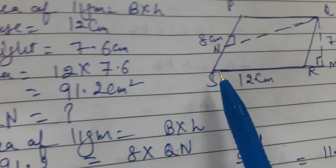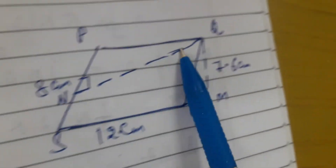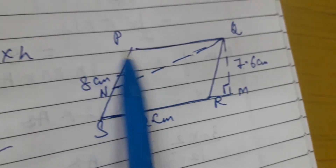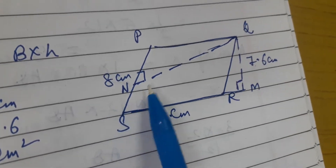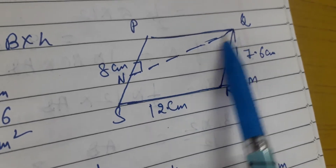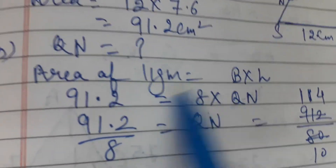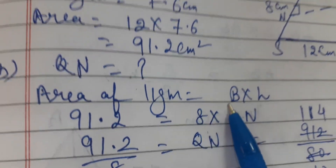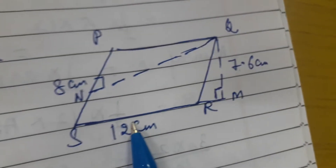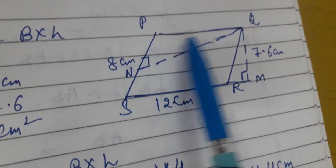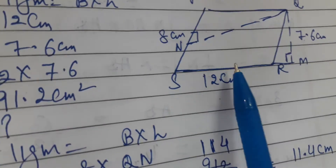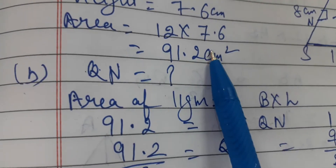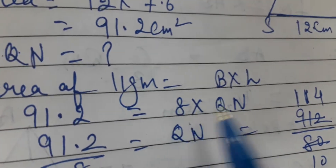In the first part we find the area of the parallelogram, and in the second part we find the length of QN — meaning we find the height when the base is 8 centimeters. The area we calculated earlier, 91.2, is the same because it is the same parallelogram. No matter how you rotate it, the area remains the same. So area 91.2 is divided by base 8 to find height QN.